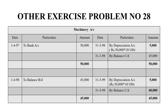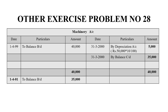In the machinery account, as on 1/4/97, they purchased machinery for $50,000. The working note account shows depreciation of $5,000, that is $50,000 × 10/100, and the balancing figure is $45,000. Grand total on both sides is $50,000. Bringing down $45,000, depreciation again $5,000, balancing figure $40,000. On 1/4/99, bringing down $40,000, depreciation $5,000, balancing figure $35,000, grand total $40,000.